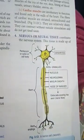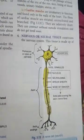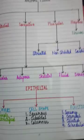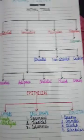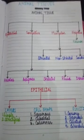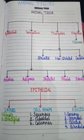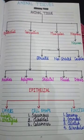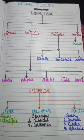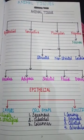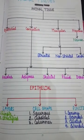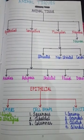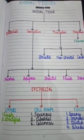So these were the major parts of nervous tissue. This topic is relevant for both standard seven and standard nine. In the next class, I will clear your doubts and queries. Thank you.